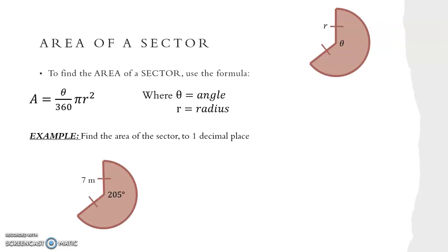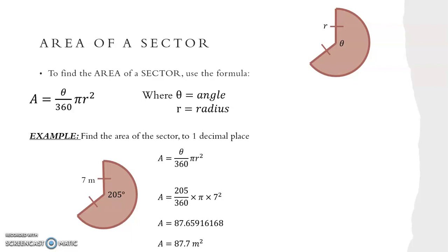For the area of a sector we use the formula A equals theta over 360 times pi R squared, where theta stands for the angle and R stands for the radius. To find the area of the sector to one decimal place, we write out our formula and substitute in our angle of 205 and our radius of 7. So we have A equals 205 over 360 times pi times 7 squared. We put this into our calculator and get A equals 87.65916168, which rounds to one decimal place as 87.7 metres squared.